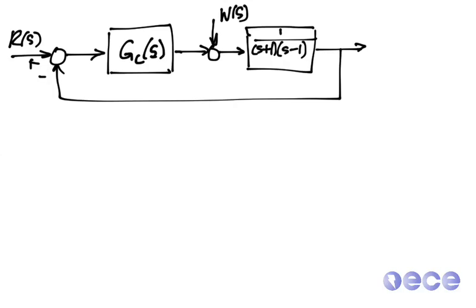A previous example showed why, if you have an unstable plant, you should not choose a controller that exactly cancels one of the unstable poles.